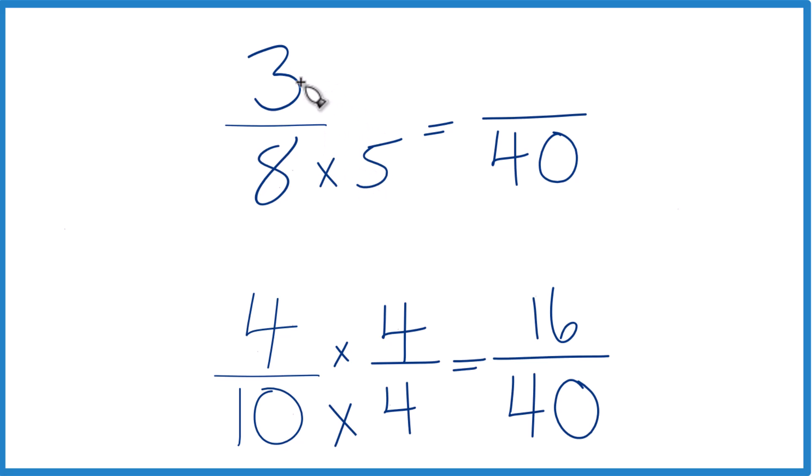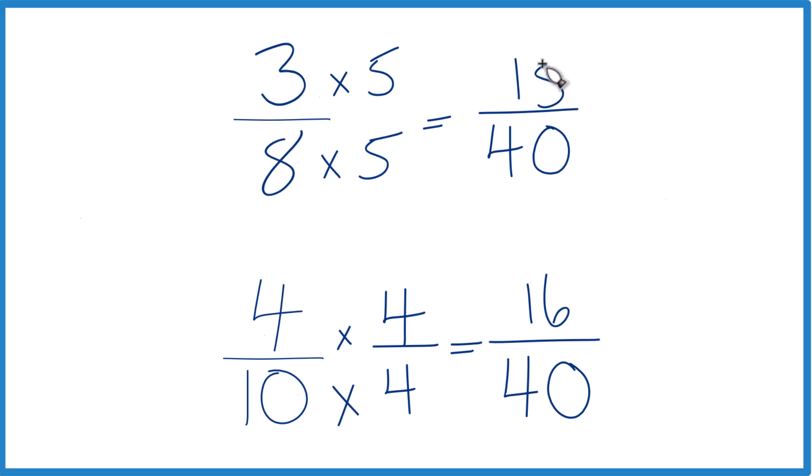Up top, we're going to multiply 3 times 5, and that'll give us 15. And now, because we have this same denominator here, we just compare the numerators.